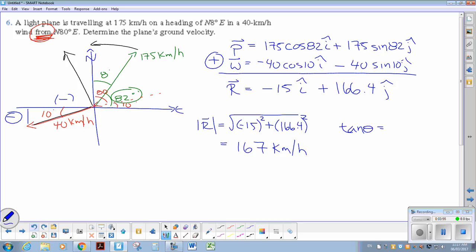And tan theta is the y component over x component. And again, don't need to put your negatives in here, because we know the direction it's heading. So I get an angle of, let's see, 166.4 divided by 15. That gives me 80, let's call it 85 degrees. Make it easy.